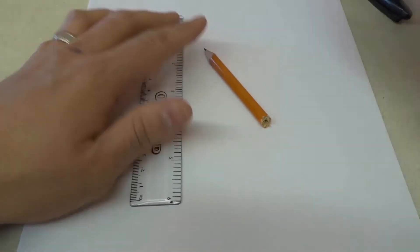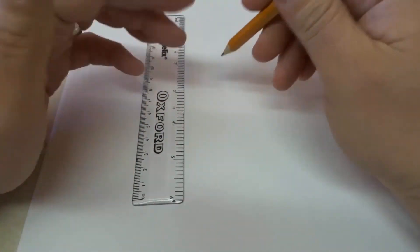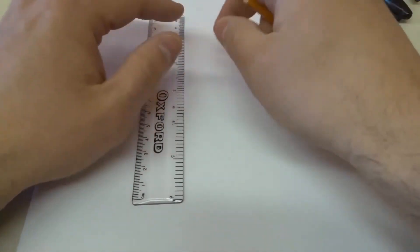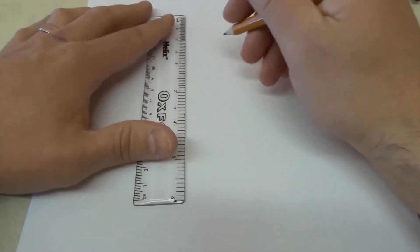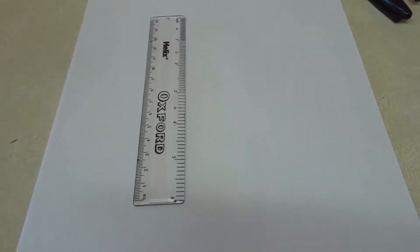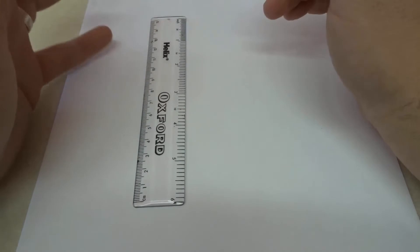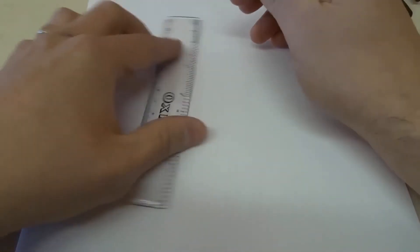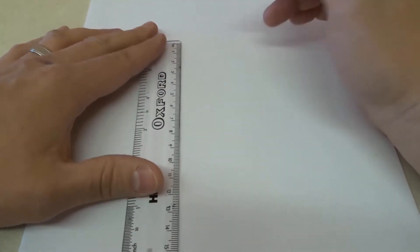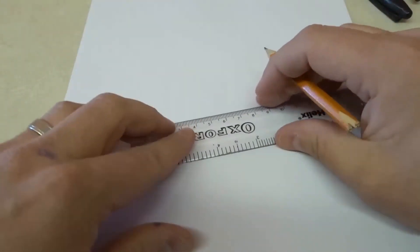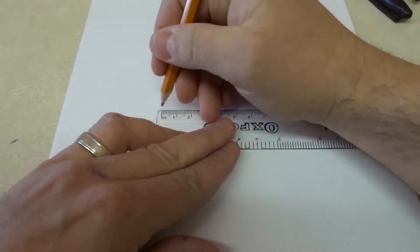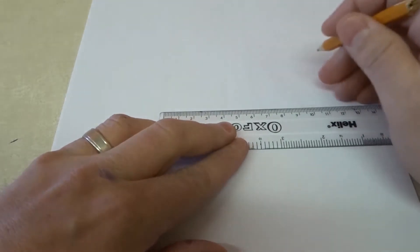First and foremost you're going to make a square, and to make a square you need four equal length sides. You can decide whatever length you want to choose. Just to keep this nice and simple I will choose six centimeters. So I'm going to start off at the bottom and draw a six centimeter line.